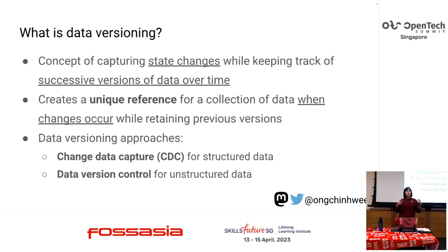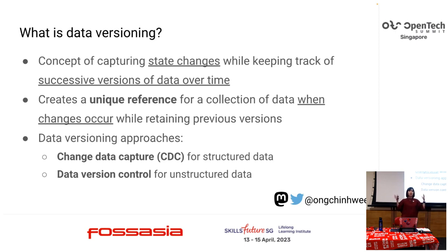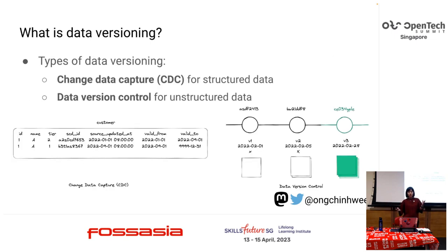This brings us to the importance of data versioning. Data versioning is the concept of capturing state changes while keeping track of successive versions of data over time. For each data record, you need to create a unique reference for that collection of data when changes occur, while retaining the previous versions. There are two general approaches: change data capture for structured data, and data version control for unstructured data.